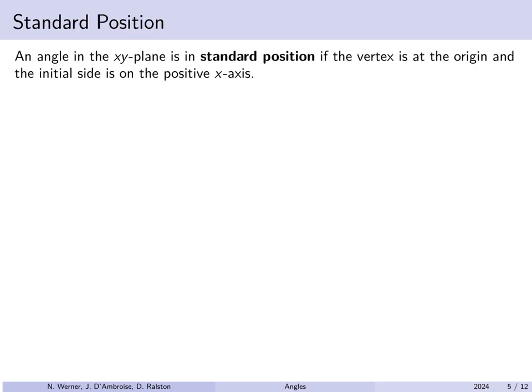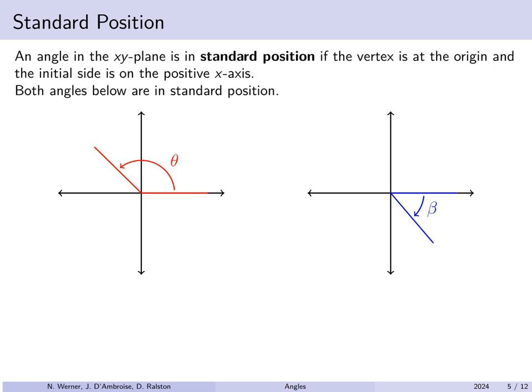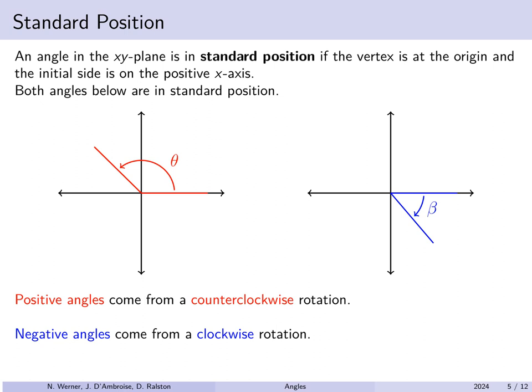In the xy-plane, the standard position for an angle is to place the vertex at the origin and the initial side along the positive x-axis. Here are two angles in standard position. By convention, positive angles represent a counterclockwise rotation — going from the initial side to the terminal side counterclockwise makes the angle positive. In contrast, a clockwise rotation from initial to terminal side is a negative angular amount. So theta is positive because it rotates counterclockwise, whereas beta is negative because it rotates clockwise.